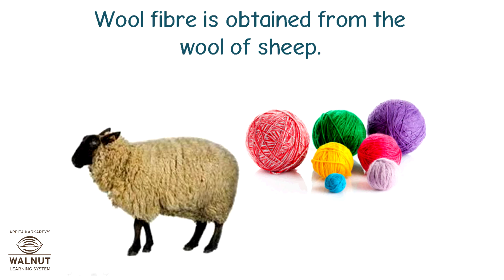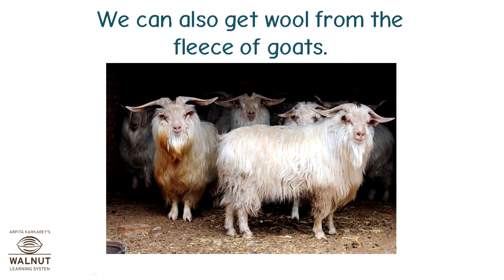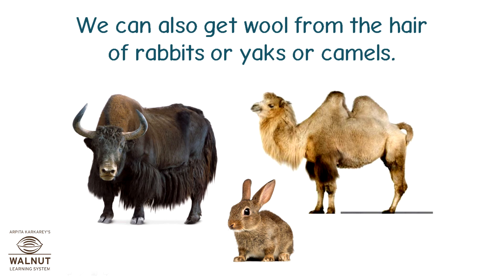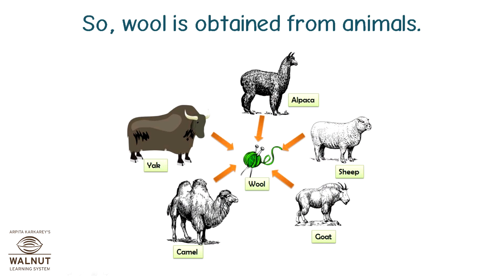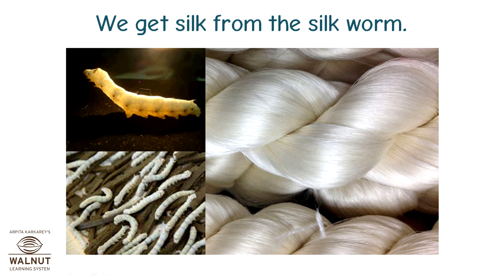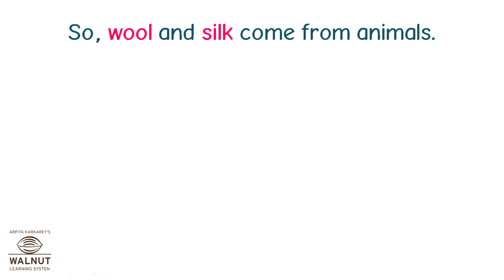Wool fibre is obtained from the wool of sheep. We can also get wool from the fleece of goats, and from the hair of rabbits, yaks, or camels. So, wool is obtained from animals. We get silk from the silkworm. So, wool and silk come from animals.